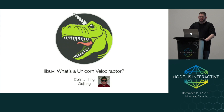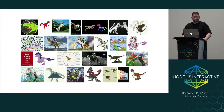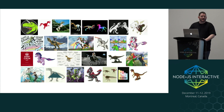The title of my talk is LibUV: what's a unicorn velociraptor? So if you were to enter that into Google you would see some results similar to this. The picture in the top left is the actual LibUV logo, and then things just kind of go off the rails from there — we have a dinosaur riding a unicorn, and for some reason a Chicago Bears football player is on a dinosaur.